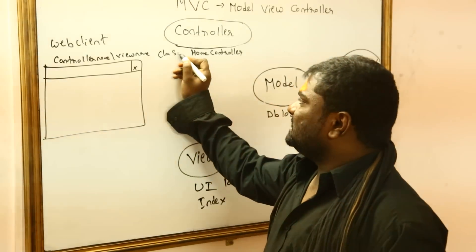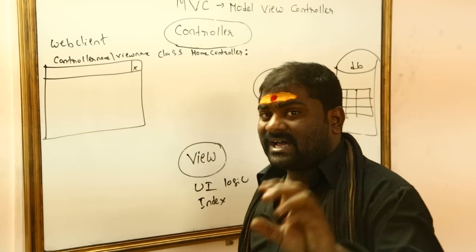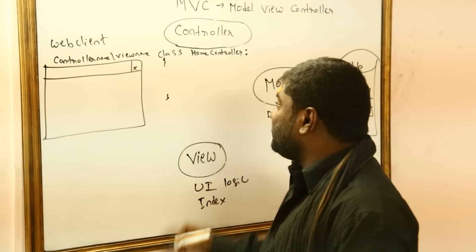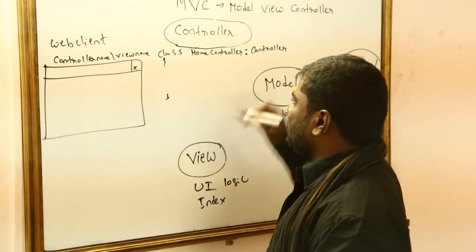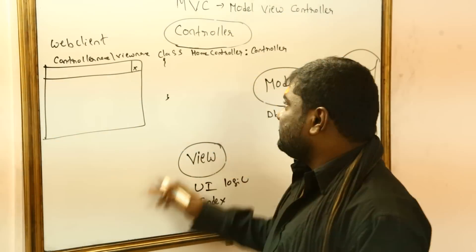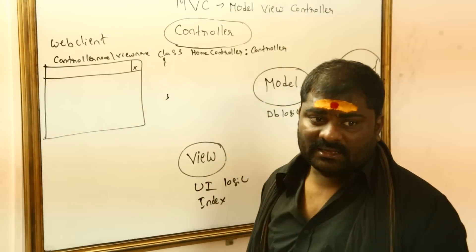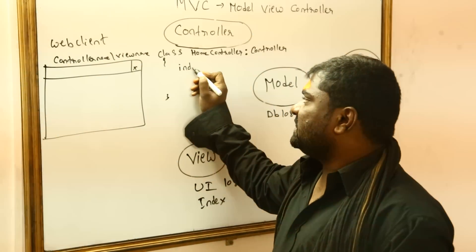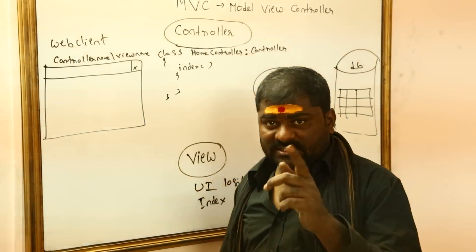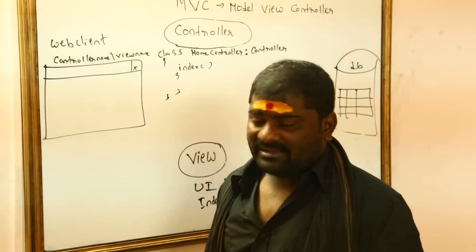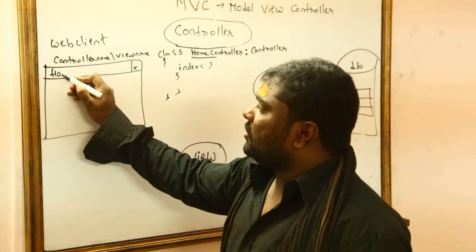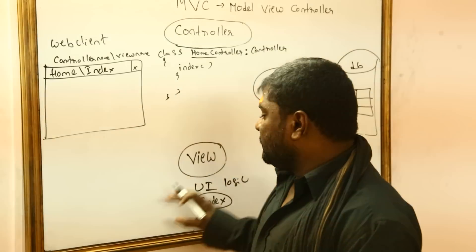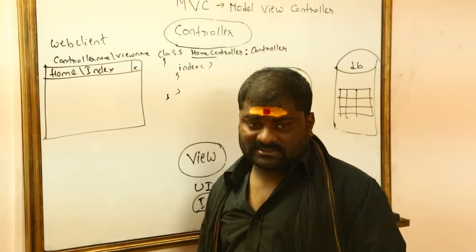The class HomeController inherits from Controller class, which makes it a controller. When I add a view, the view comes in the form of a method named Index. So when a user types the request in the URL, they give the controller name — Home — slash the view name — Index. The view becomes a method inside the controller class.